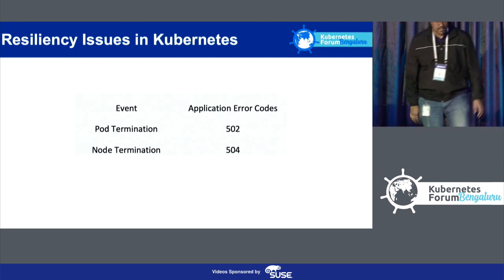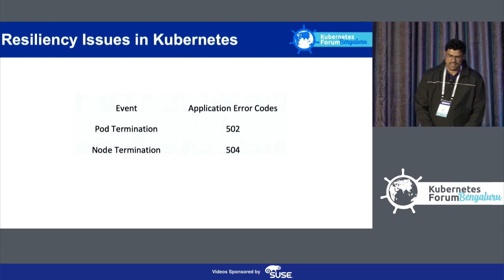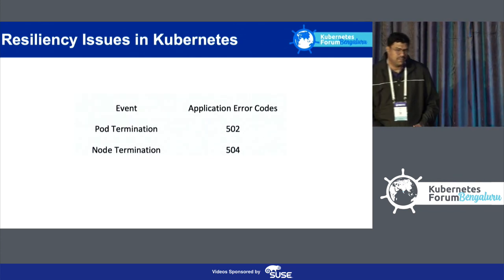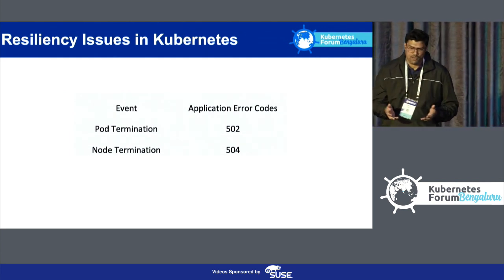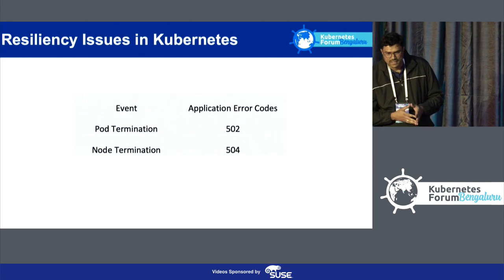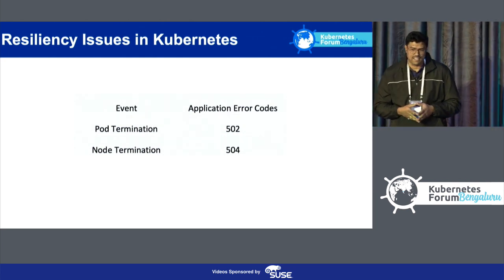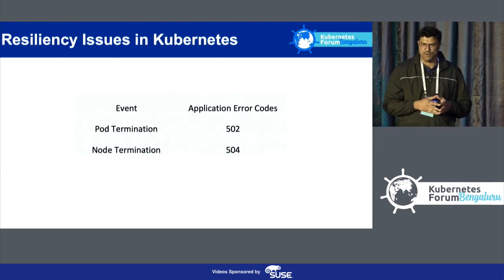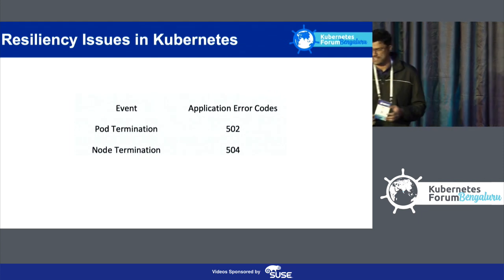We see the scale at which we are operating. No matter how well we design an application, the system throws challenges at us. The challenges we've run into predominantly in the Kubernetes platform are pod termination and node termination. Our clients used to see 502 errors whenever there was a pod termination event, and 504 errors on their HTTP client when there is a node termination event.